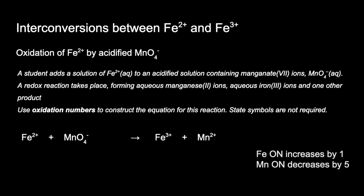We put 5s in front of the iron species so the total oxidation number changes match each other. Next we're going to balance the charge left and right, and because it's acidified we're going to use H⁺ ions to do this.